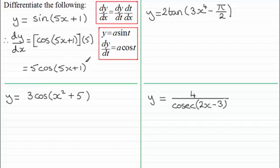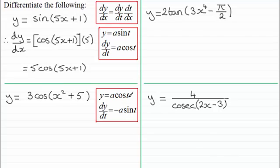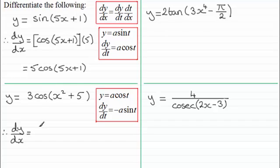The other examples are all very similar, so you might want to pause the video and try your hand at these examples. When it comes to y equals 3 cosine of all of x squared plus 5, we let t equal x squared plus 5, because it now has the form y equals a cosine t. Differentiating with respect to t gives minus a sine t. So we've got y equals 3 cosine t, and differentiating that with respect to t gives us minus 3 sine t.